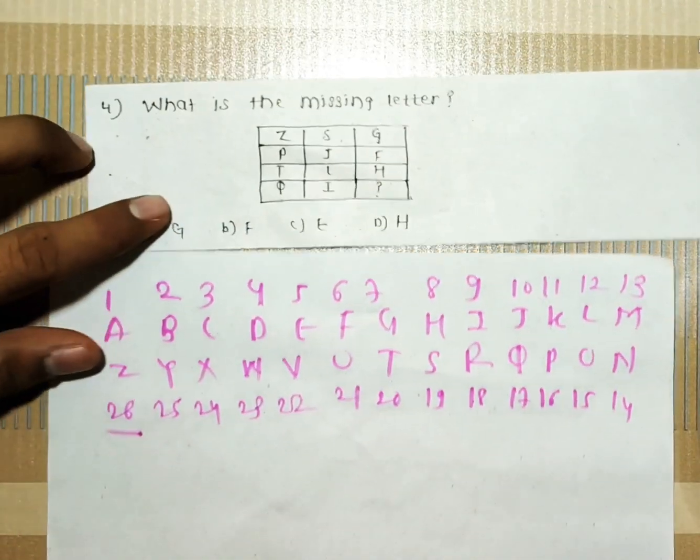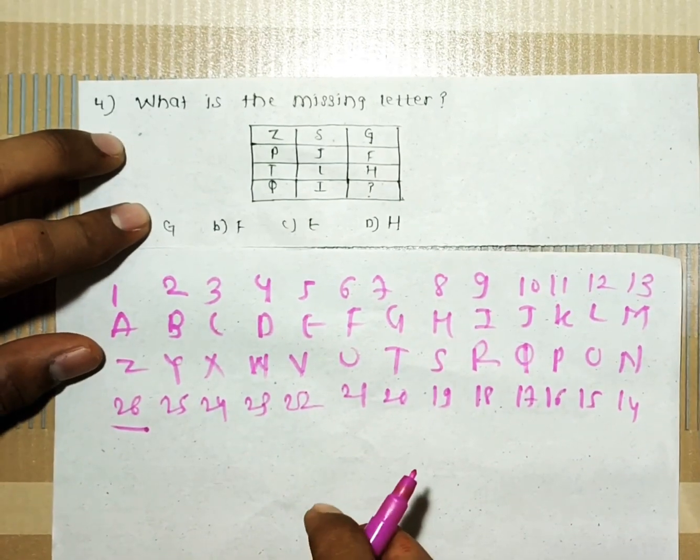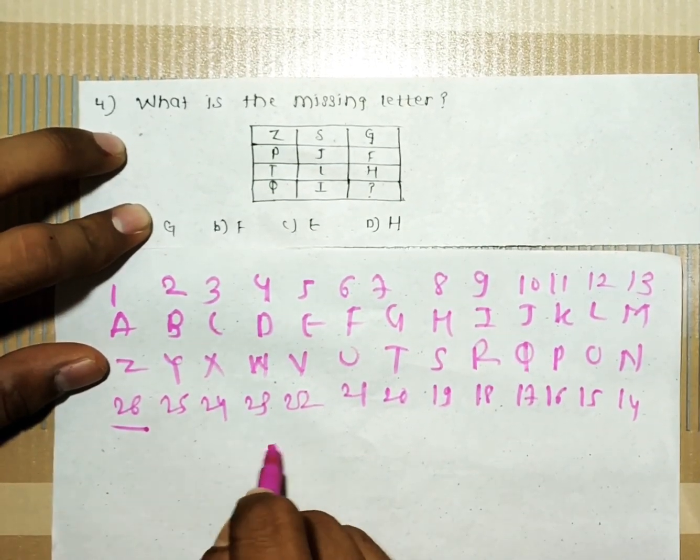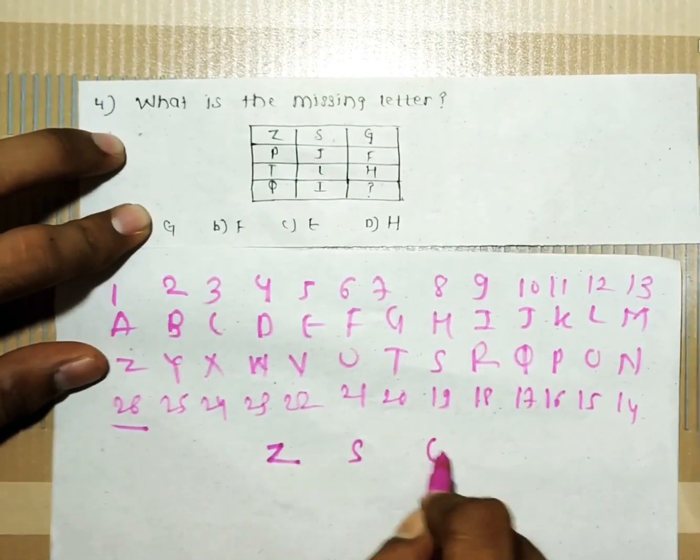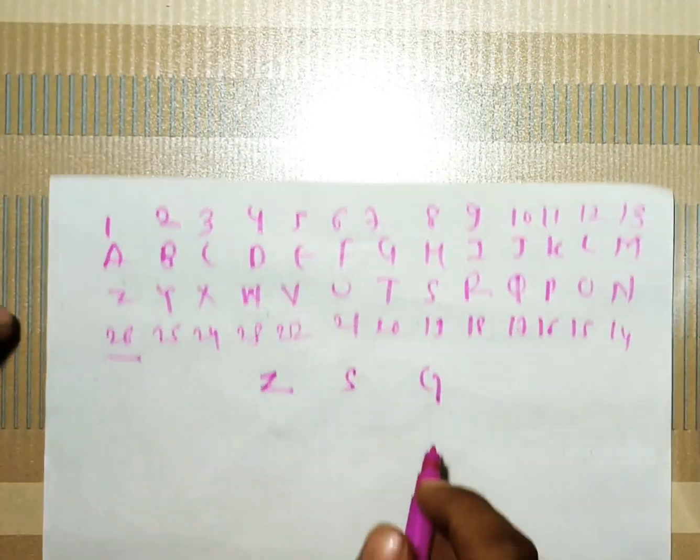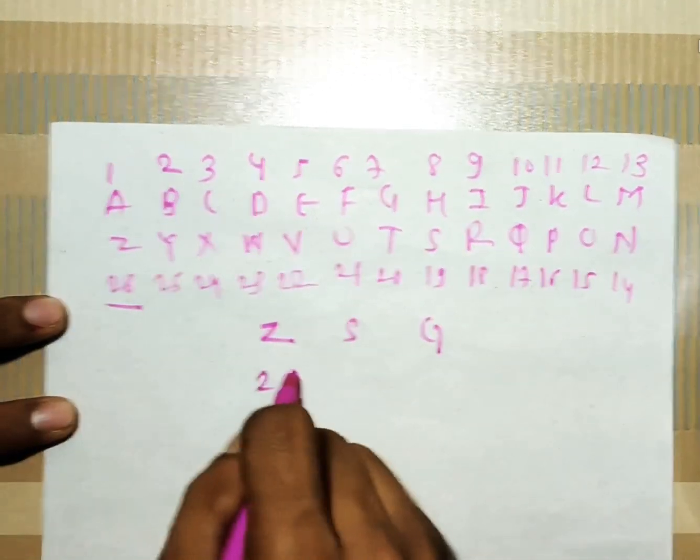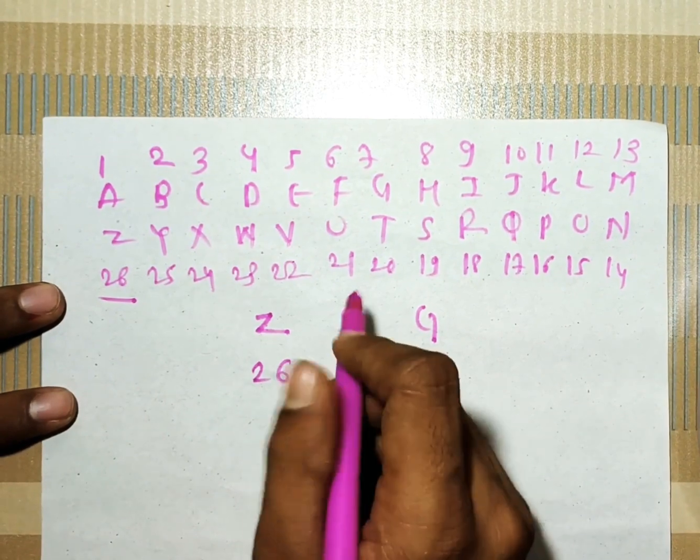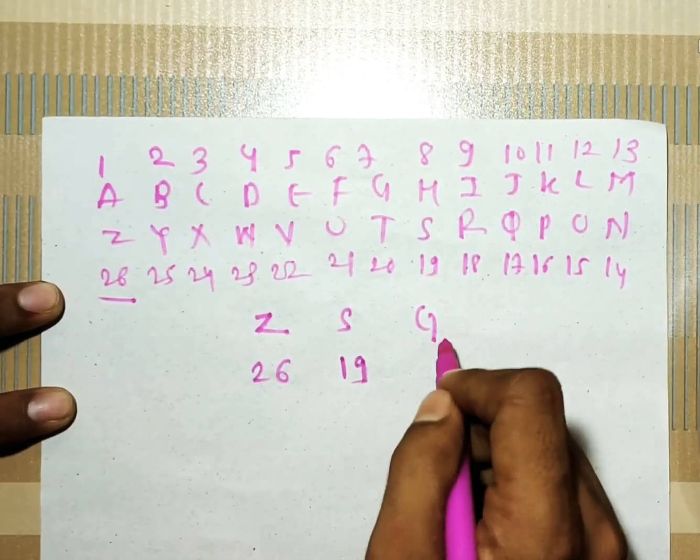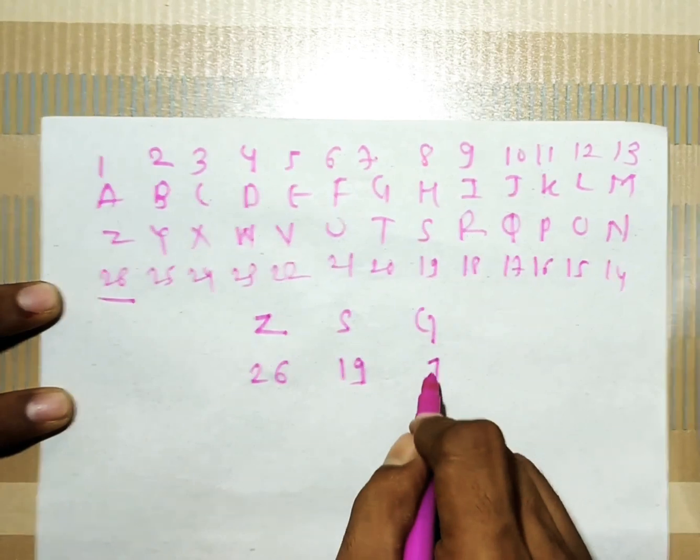Now let's see what is given in the question. Z, S, G. In the first row there is Z, then S, then G. Then we just have to see what is the number for Z? 26. So we can write here 26. For S there is 19. So 19. And for G there is 7. So 7.